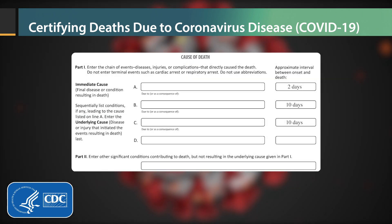The immediate cause was acute respiratory distress syndrome, so that should be on Line A, as a consequence of pneumonia, which should go on Line B. The underlying cause was COVID-19, so it should be reported on Line C, the lowest line used in Part 1.